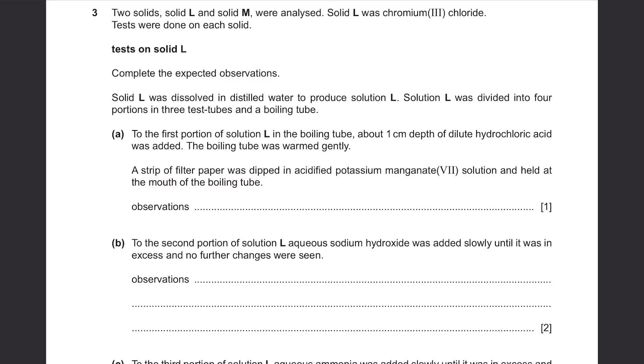Part A: To the first portion of solution L in the boiling tube, about 1 cm depth of dilute hydrochloric acid was added. The boiling tube was warmed gently. A strip of filter paper was dipped in acidified potassium manganate(VII) solution and held at the mouth of the boiling tube. Solution L contains chromium chloride dissolved in distilled water. And acidified potassium manganate(VII) is used to test the presence of a reducing agent. In the presence of a reducing agent, this will turn from purple to colorless. So we are required to find out whether adding chromium chloride with dilute hydrochloric acid and heating it will produce a reducing agent. Chromium(III) is a metal and this is an acid. If you add metal with an acid, you get salt. In this case, it will be chromium hydroxide and hydrogen. But none of these are reducing agents. So nothing's gonna happen. It's just gonna stay the same in purple.